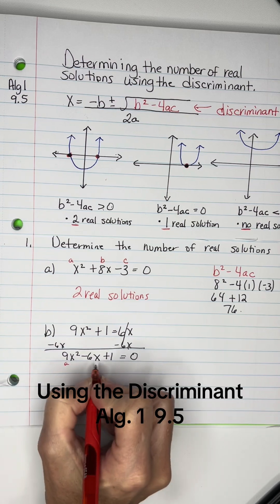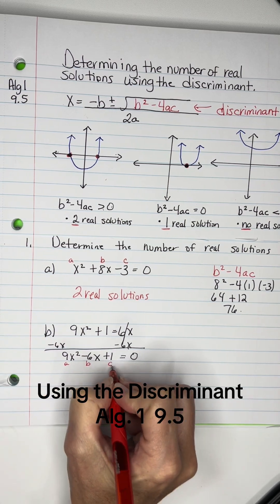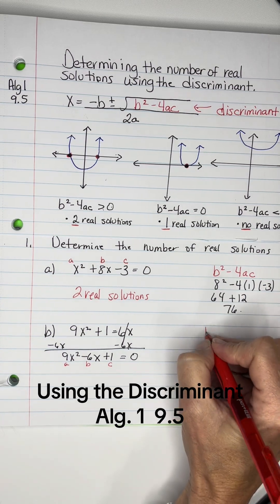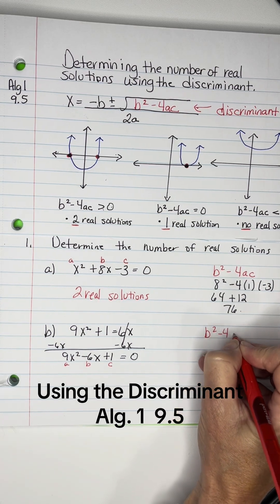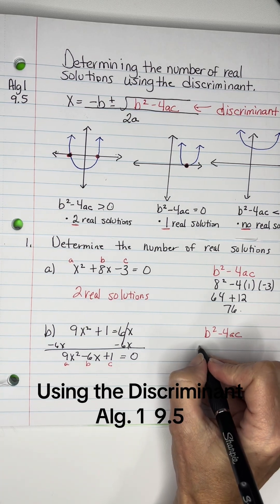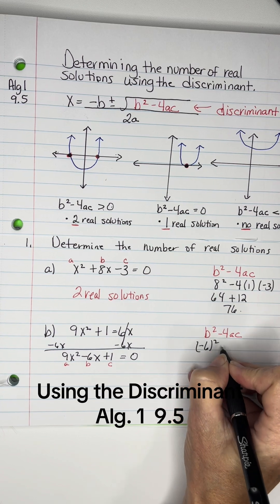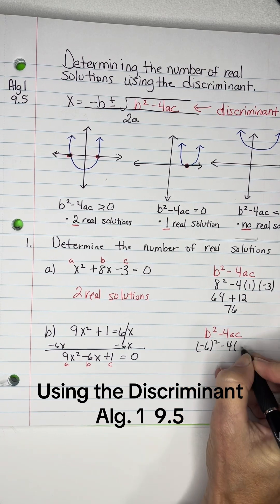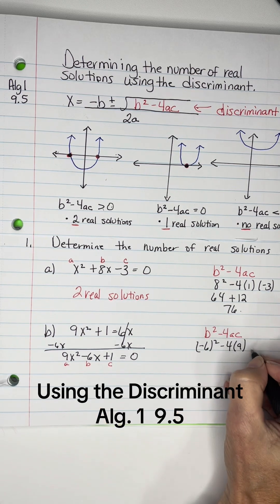My A is 9, my B is negative 6, and my C is 1. So let's go over here and say B squared minus 4AC, and plug our numbers in. I've got a negative 6 squared minus 4 times A is 9, and C is 1.